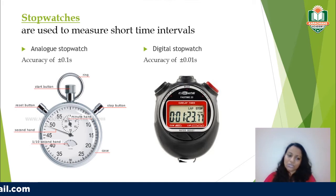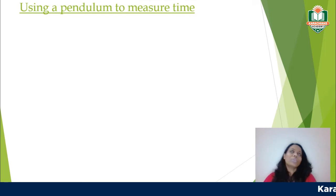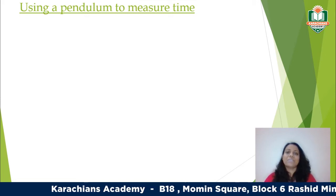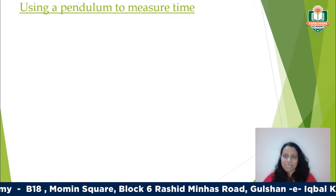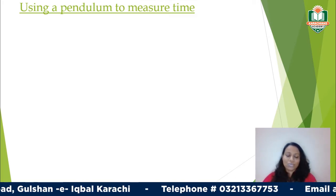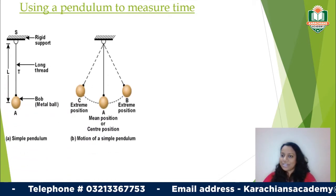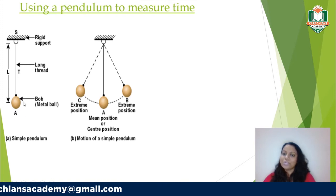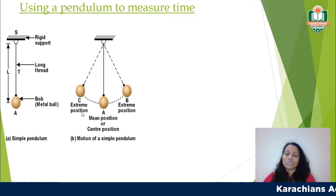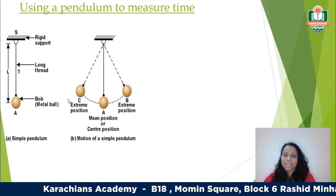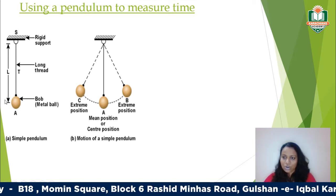When talking about measuring time, the fundamental mechanism is the pendulum. Watches and stopwatches all have a certain element embedded that vibrates to give time. A pendulum consists of a long string with a metallic ball attached — called the bob — fixed to a support. The movement of this pendulum is used to measure time, as the time it takes to move is exactly the same every time.